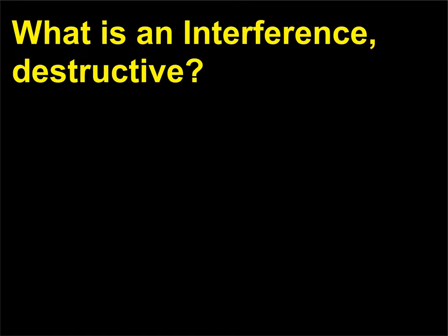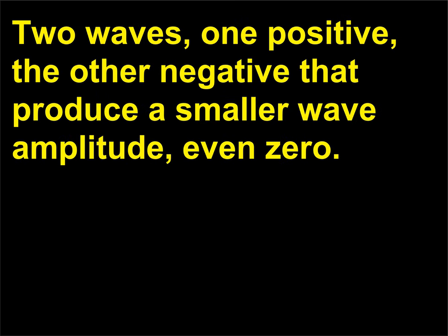What is destructive interference? Destructive interference occurs when two waves — one positive, one negative — produce a smaller wave amplitude, even zero.